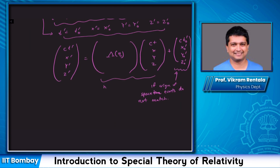This offset makes the Lorentz transformation inhomogeneous — adding a constant offset in space and time — as opposed to the homogeneous transformation we had before. But this is a very trivial change.